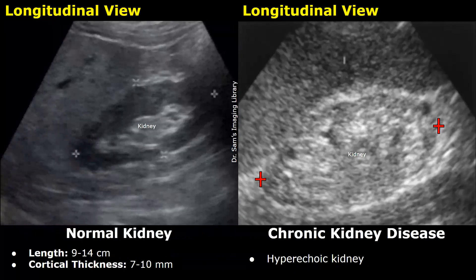On ultrasound, a normal kidney has a hyperechoic central renal sinus with a hypoechoic cortex and medulla. The medulla is more hypoechoic than the cortex. This is how a normal kidney appears on ultrasound.